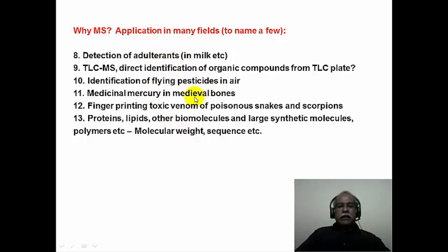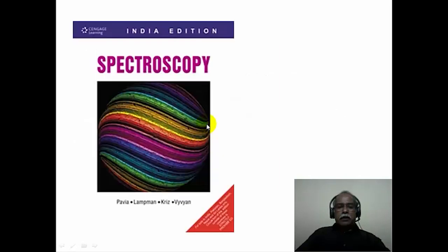These are further applications of mass spectrometry. Structures of proteins, lipids, and other large biomolecules — whether synthetic or biological — can be determined using recent mass spectrometry techniques like electrospray ionization and MALDI. We will see examples of these techniques when we discuss ESI and MALDI in later modules.